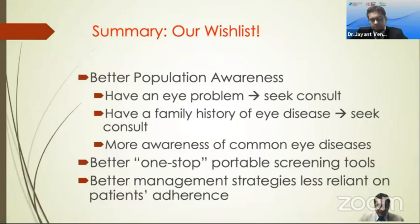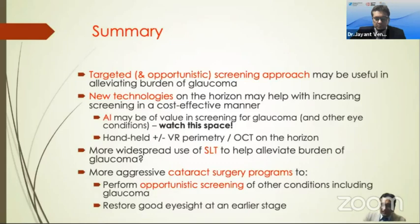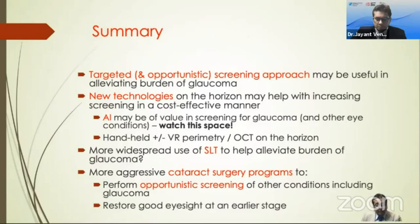In summary, our wish list includes better population awareness, better one-stop portable screening tools, and better management strategies less reliant on patient adherence. Targeted and opportunistic screening approaches may be useful in alleviating the burden of glaucoma. New technology, specifically AI, might be useful in the near future to better detect and monitor the disease. We should consider expanding the role of selective laser trabeculoplasty and doing earlier cataract surgeries — not just for hypermature or mature cataracts, but for any cataract affecting vision — to restore good sight and perform opportunistic screening for other eye conditions. Thank you very much.